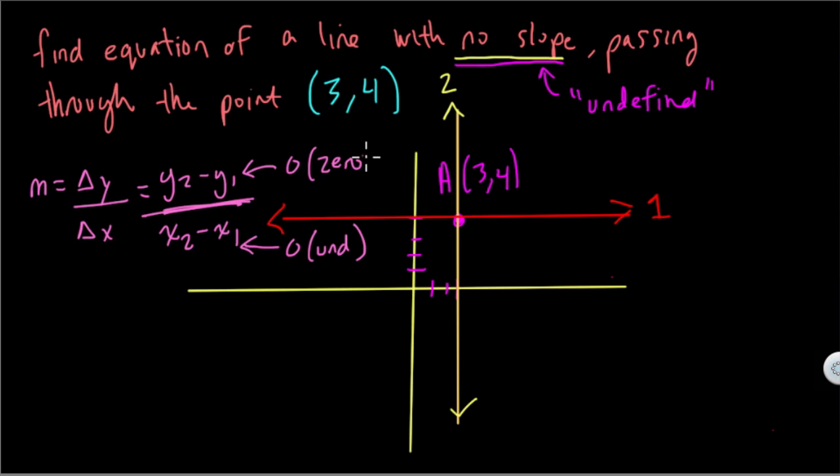So a 0 on the numerator here, the y values, will give you a 0 slope. And a difference of 0 on the x values will give you an undefined or no slope.